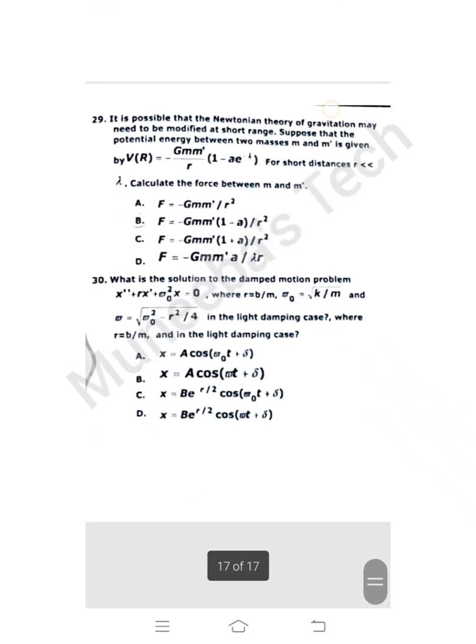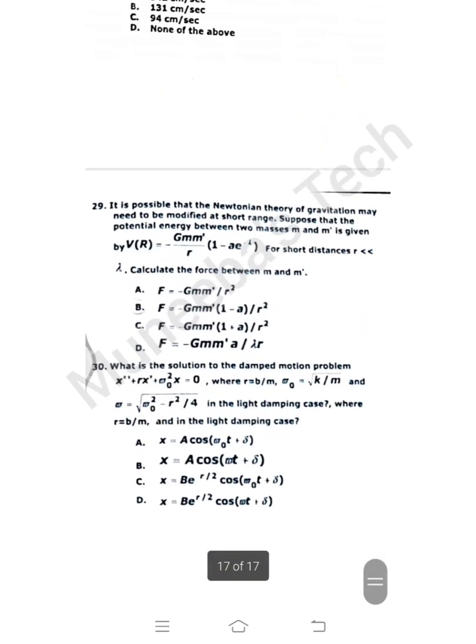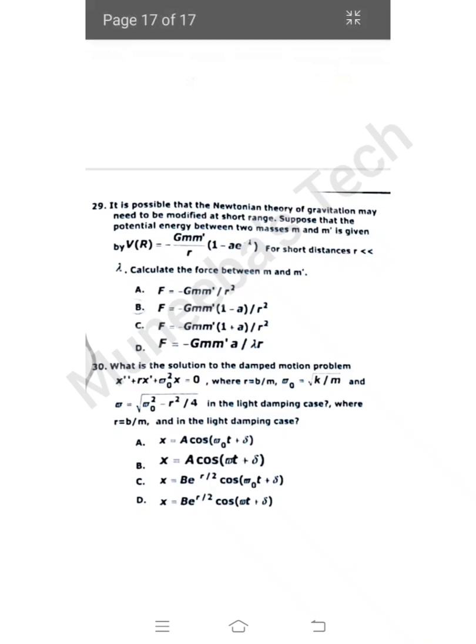Question 29: It is possible that the Newtonian theory of gravitation may need to be modified at short range. Suppose that the potential energy between two masses m and m' is given by V(r) = -Gm'm/r(1 - ae^(-λr)). For short distance where r is very less than λ, calculate the force between m and m'. We found that the answer is B.